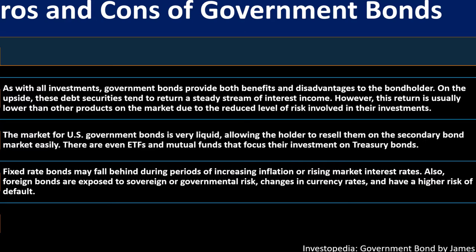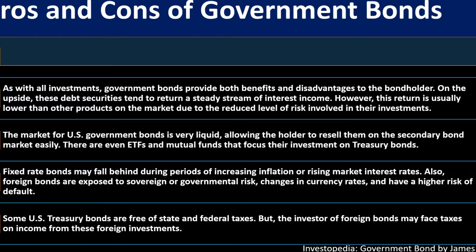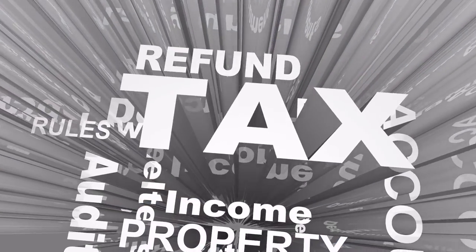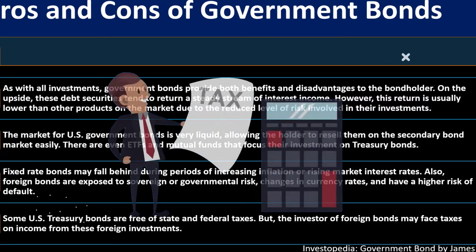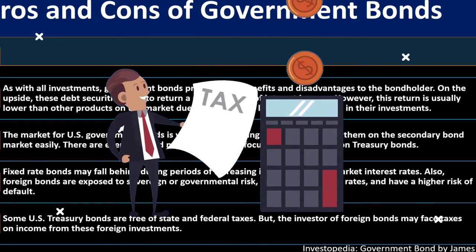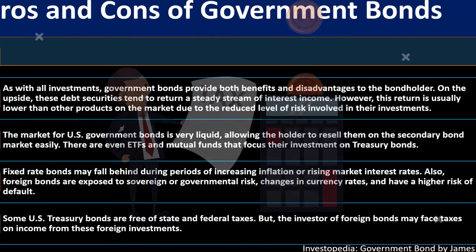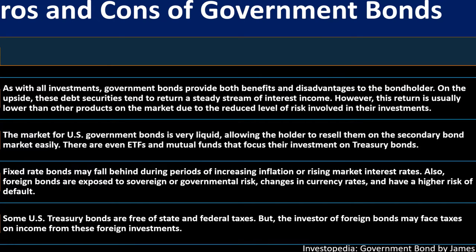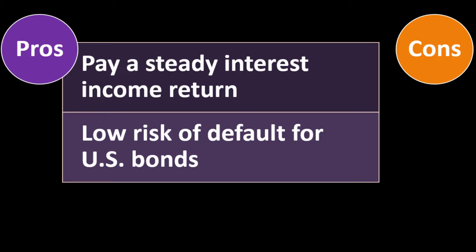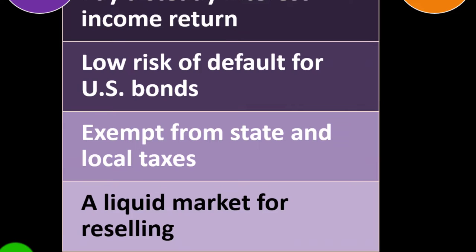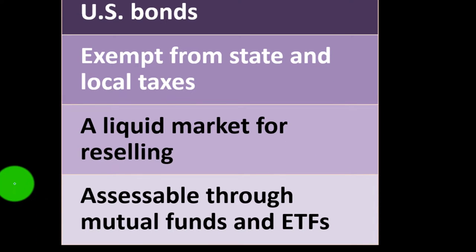Fixed rate bonds may fall behind during periods of increasing inflation or rising market interest rates. Foreign bonds are exposed to sovereign or governmental risk, changes in currency rates, and have a higher risk of default. Some US Treasury bonds are free of state and federal taxes, which is a benefit — though that tax advantage is likely factored into the market price and reflected in a lower yield. The pros include steady interest income, low default risk for US bonds, tax exemptions, a liquid secondary market, and accessibility through mutual funds and ETFs. The cons include low rates of return, fixed income falling behind rising inflation, interest rate risk, and default risks on foreign bonds.